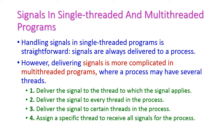Let us see signals in single-threaded and multi-threaded programs. In single-threaded programs, this is very simple and straightforward. Signals are always delivered to the process because the process has only one thread, so delivering the signal to that particular thread is very easy.